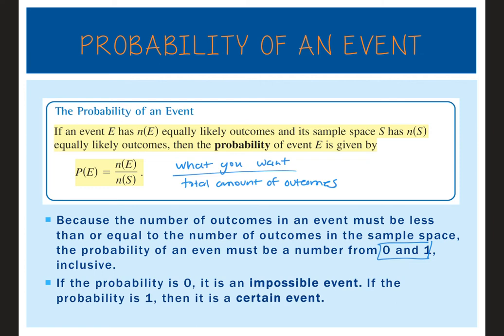If the probability is 0, it's an impossible event — like rolling a six-sided die and landing on an 8; that's obviously impossible. If the probability is 1, it's a certain event — like rolling a die and landing on a number less than 7, since every number on that die is less than 7.